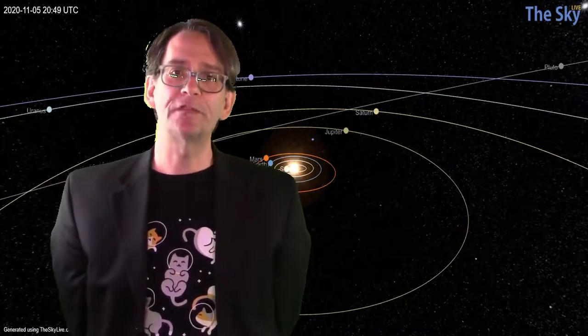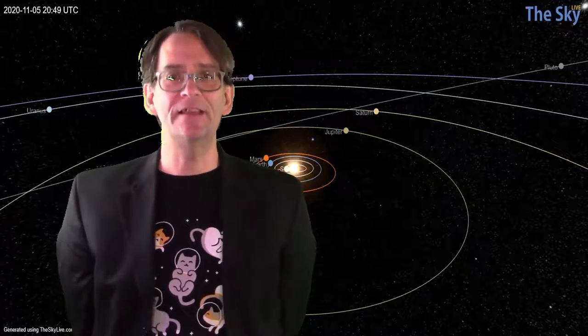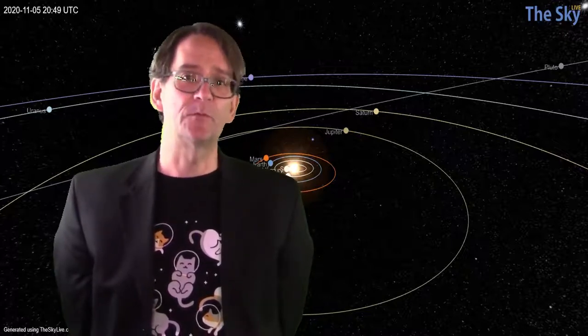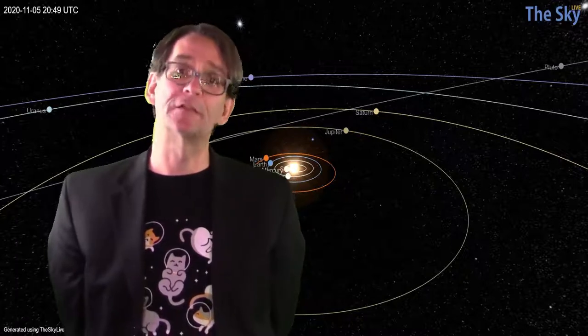These planets are all visible with the naked eye other than Uranus and Neptune, which can be seen with binoculars or a small telescope.